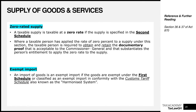Let's move on to what we call zero-rated supplies. A taxable supply is taxable at a zero rate if it is listed on the second schedule. If you watched our previous video, we explained exempt supplies to be supplies listed on the first schedule. Now, if you find an item listed on the second schedule, that item is not exempt from VAT — it is indeed subject to VAT, just that the rate of tax applicable will be 0%.